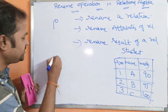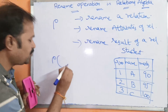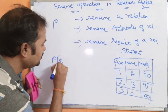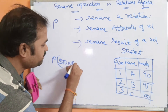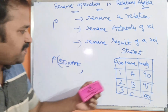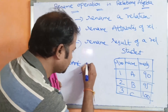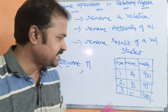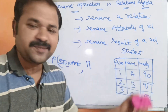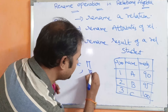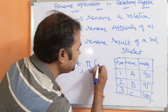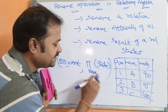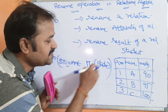Now let us perform an operation. We write rho of new relation name student_name, comma, then apply the project operation — pi of name from Student. Whenever this statement is executed, the name column will be extracted from the student relation.